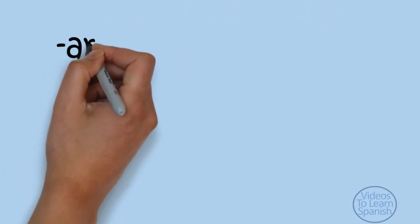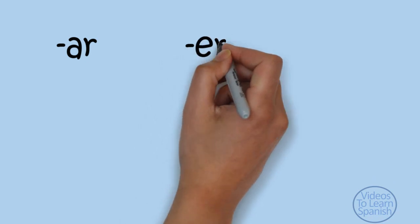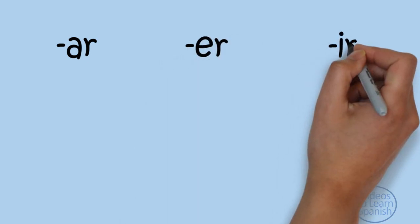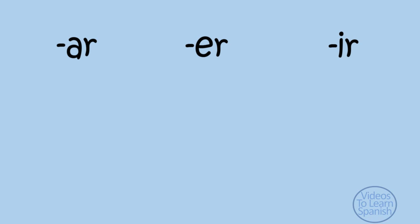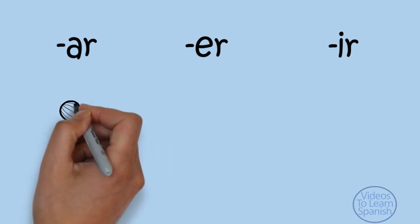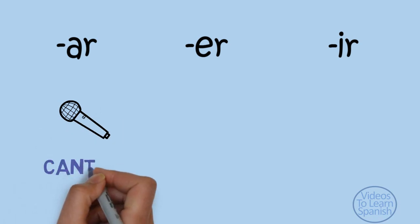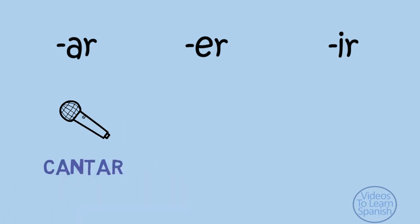In Spanish, as in other Latin languages, tenses need to be conjugated. This means that the ending of the verb will vary depending on the person who is executing the action. In Spanish, all verbs have an infinitive finishing either by AR, ER, or IR.